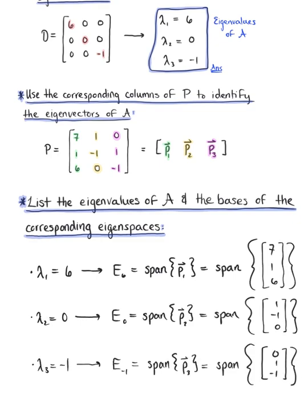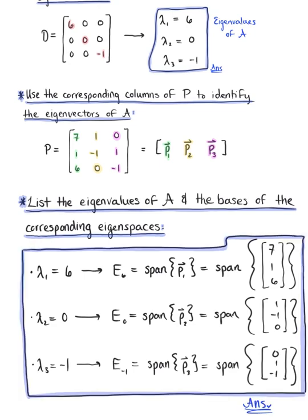And so there you have it. These are the eigenvalues of matrix A and the basis of their corresponding eigenspaces, making this our final answer. Thank you.